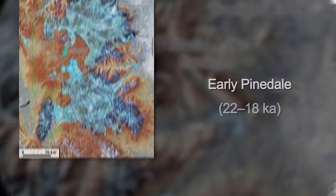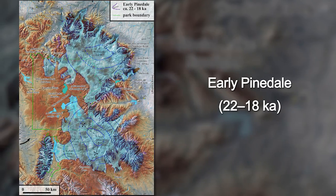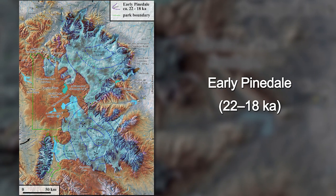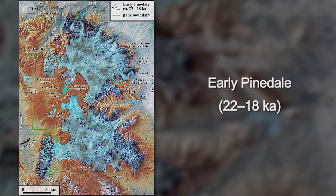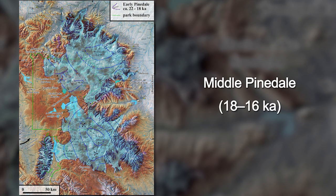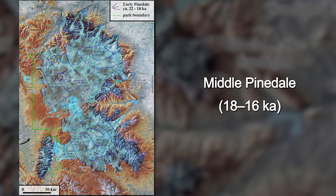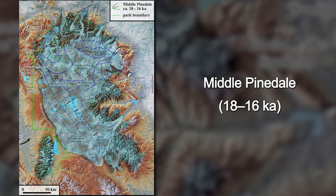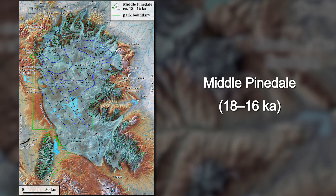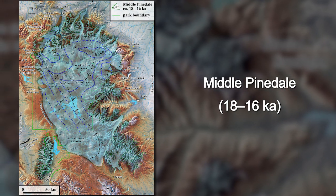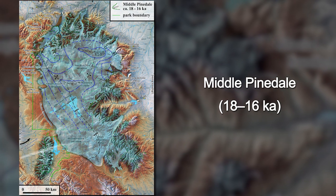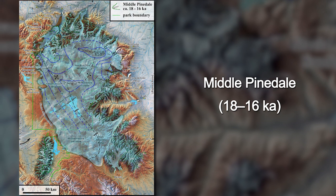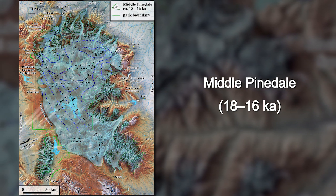In early Pinedale time, glaciers reached their maximum extents around the Yellowstone Plateau. By middle Pinedale time, a 1 kilometer thick ice cap had formed over Yellowstone, stimulating orographic glacial buildup that was nourished by winter storms funneled through the Snake River plain.